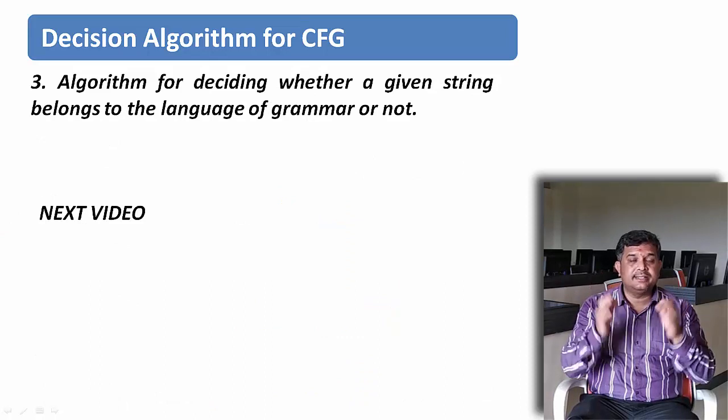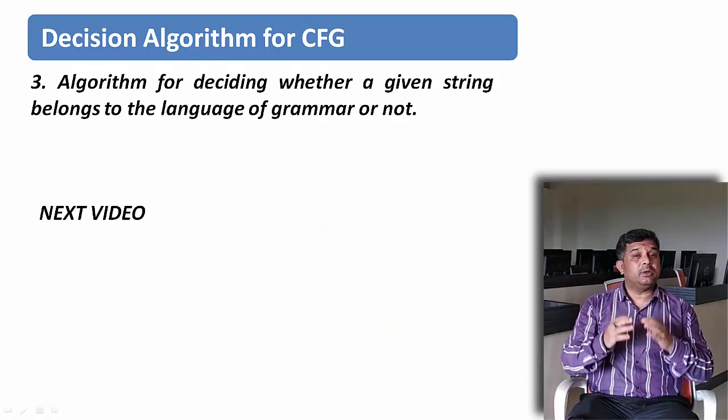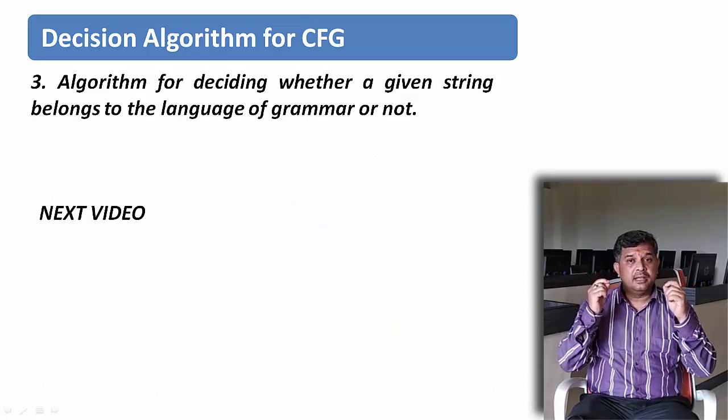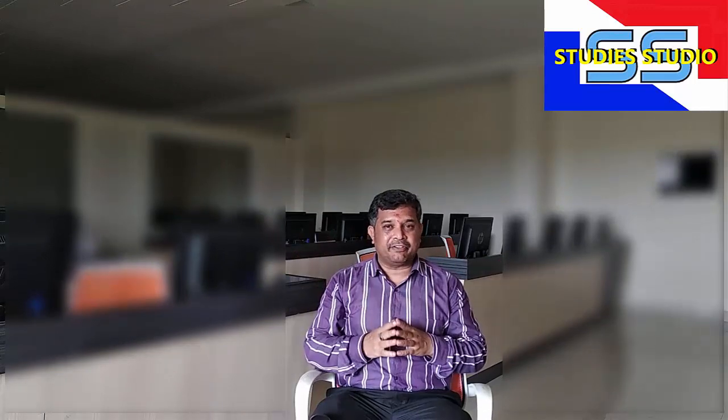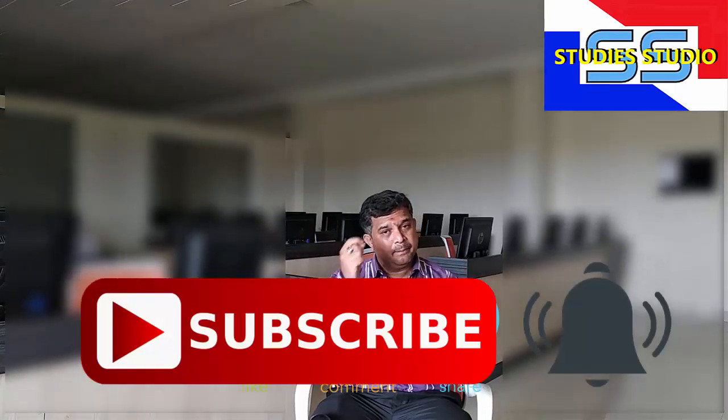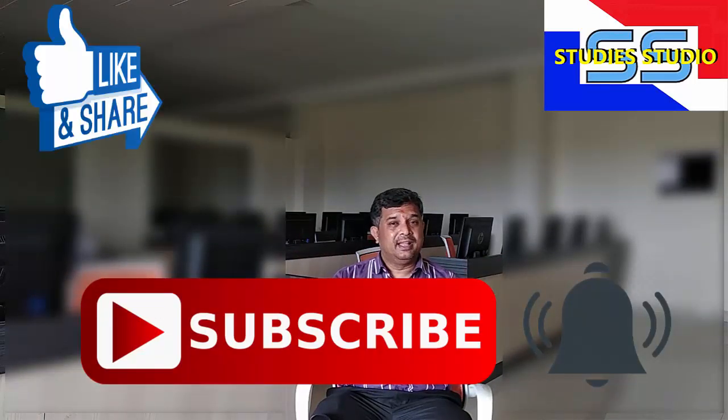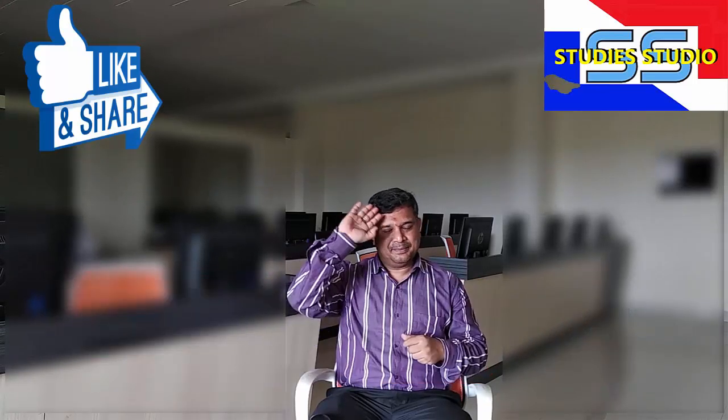We are going to discuss the next algorithm in our next video, because if we discuss it here the video length will be too long. I hope you understood the first two decision algorithms on context-free grammars. In our next video we are going to discuss whether a particular string belongs to a context-free grammar or not. If you understood these two algorithms, give me a like and share among your friends. If you have not yet subscribed, please subscribe. See you in our next video — take care, bye.